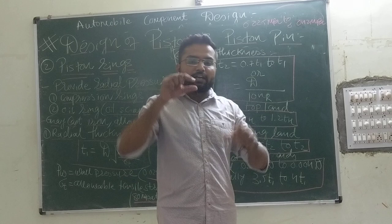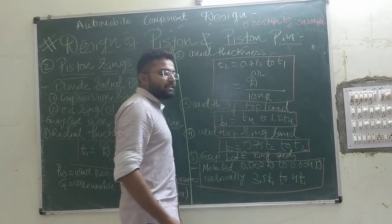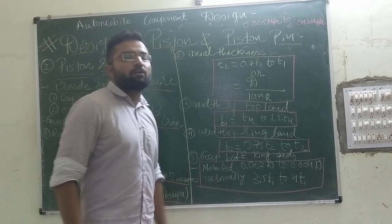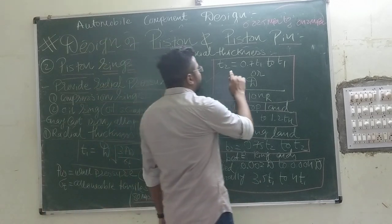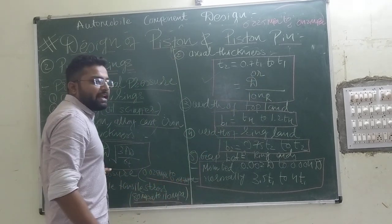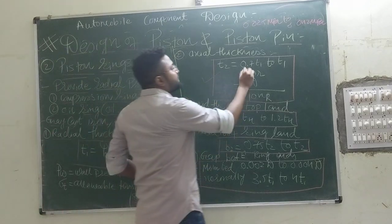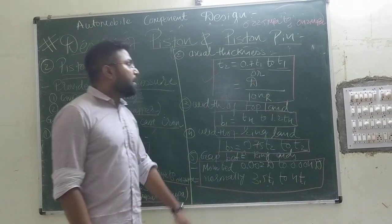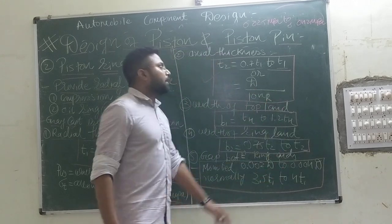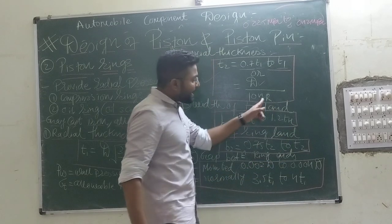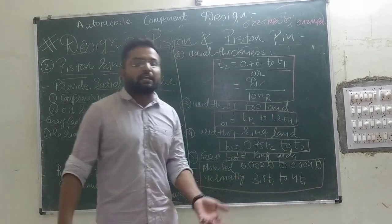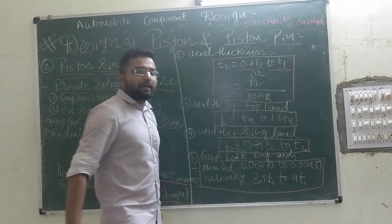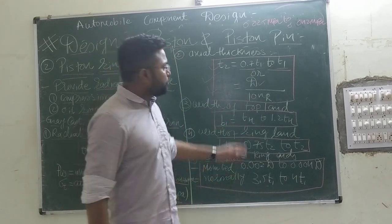After that, we are going to determine the axial thickness T2. Radial thickness is from the top view, and axial thickness is from the side view. The axial thickness will be lesser than the radial thickness, but it has empirical formulas. There are two equations: one is T2 = 0.71 × T1, where T1 is the radial thickness. The second formula is T2 = D / (10 × NR), where D is the diameter of the piston and NR is the total number of rings. Both formulas are applicable and you can use either of them.